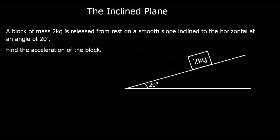In this video we're going to look at inclined plane problems, so problems involving a slope. We've got a block of mass 2kg being released from rest on a smooth slope. Smooth slope means no friction.